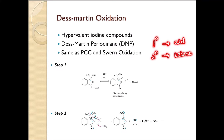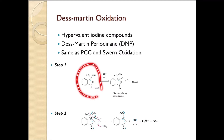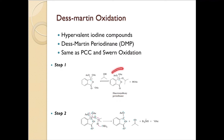Now let's look into the mechanism for Dess-Martin oxidation. Here is our DMP. The DMP is going to react with an alcohol to produce diacetoxyalkoxyperiodinane. Here you can see the 2-acetoxy group and here is your alkoxy group.